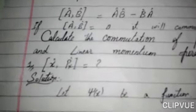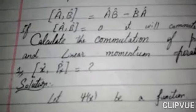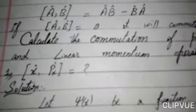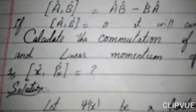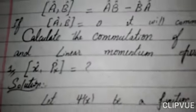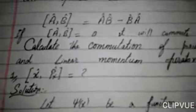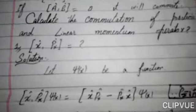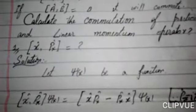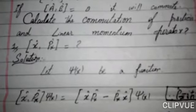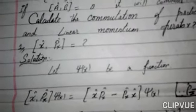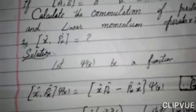If these operators are equal to zero, then they will commute with each other. Here we take an example. In order to solve the commutation of the position and linear momentum operator, we have a solution of both of these operators.